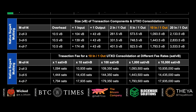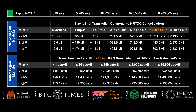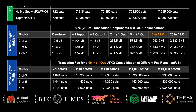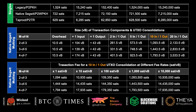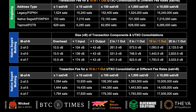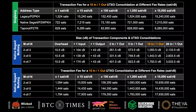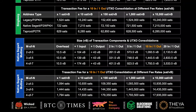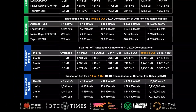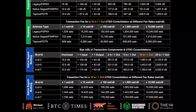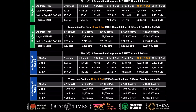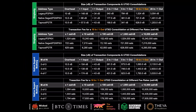Consolidating UTXOs involves creating a new transaction that consumes several smaller UTXOs and produces a single larger UTXO sent back to one of your addresses. Ideally, you want to consolidate your UTXOs during low transaction fee rates or when it's most economically advantageous for you.